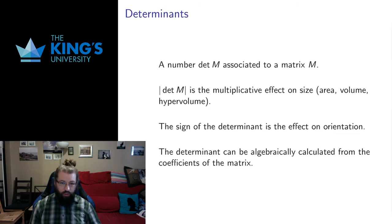So there's a number. It's written determinant M, det M, associated to a matrix M. And it has two properties. It's a real number. Its absolute value is the multiplicative effect of the transformation on size, area, volume, hyper-volume.